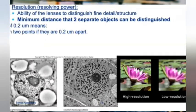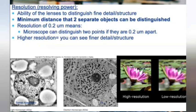Resolution — also called resolving power — is the ability of your objective lenses to distinguish between two points. Higher resolution means a better image, just like newer phones with higher resolution have crisper images. If a microscope has a resolution of 0.2 micrometers, it means it can distinguish two points if they are 0.2 micrometers apart.